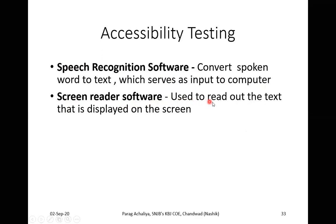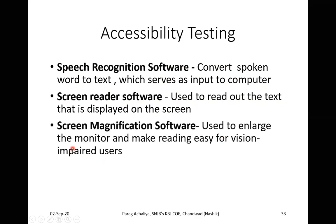Screen reader software is used to read out the text that is displayed on the screen. That application reads your text — it is text to speech, whereas speech recognition is speech to text. Screen magnification software is also available on every system — it is used to enlarge the monitor and make reading easy for vision-impaired users. It is by default installed on every operating system.